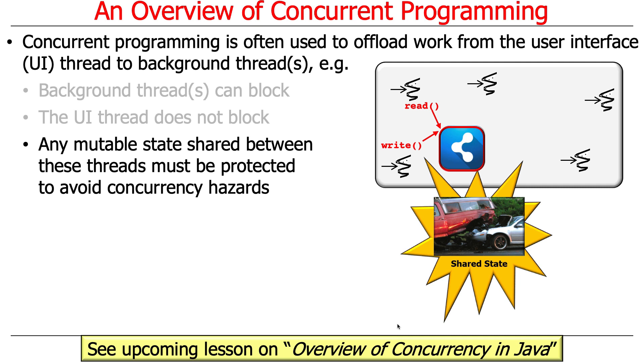And any time you want to share state between either the user interface thread and the background threads or between background threads that are running concurrently on different cores or whatever, that state, especially mutable shared state, must be protected by synchronizers to avoid concurrency hazards. And we'll talk in just a moment about some examples of concurrency hazards. But that's what makes things tricky. Getting things to run in parallel, not that hard. Getting things to run concurrently, not that hard. Getting things to run concurrently so you don't end up stomping all over other resources and corrupt the state of your program, a little more tricky.